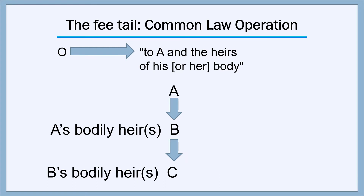Suppose one of these parties tried to make a conveyance outside the family. For example, B might execute a deed of the property to X, an outsider. X would hold the property and could use it and occupy it, but only as long as B was alive. As soon as B died, that would be the end of X's life estate, and the property would then pass back to C, the next bodily heir after B in the chain of bodily heirs.